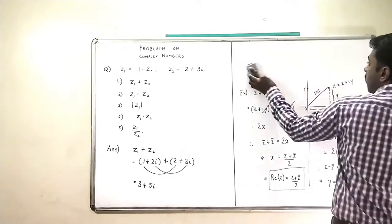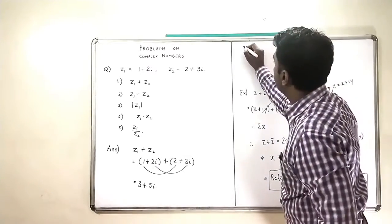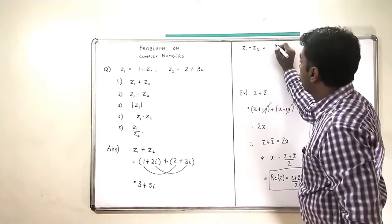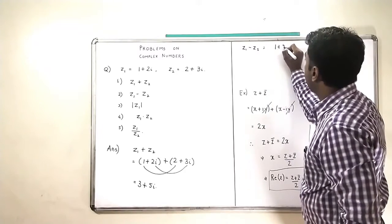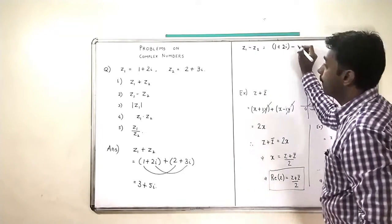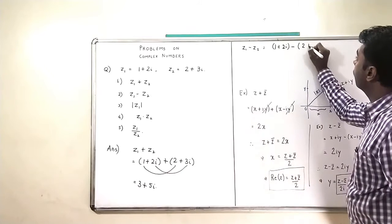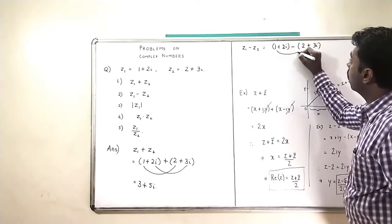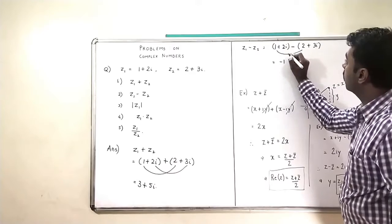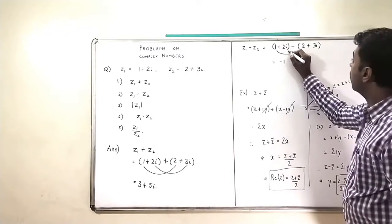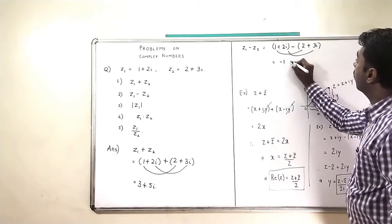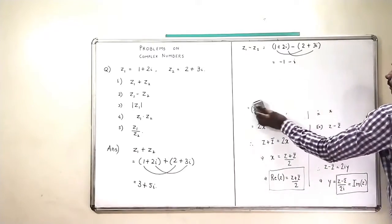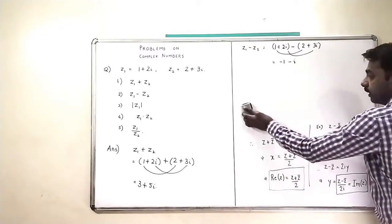If I try to find what is Z1 minus Z2, I will get 1 plus 2i minus 2 plus 3i. So I will subtract them: 1 minus 2 is minus 1, and 2i minus 3i will become minus i. So I will get minus 1 minus i as the subtraction.